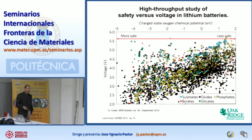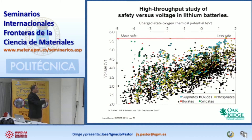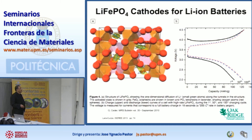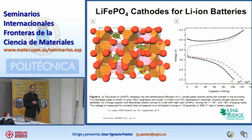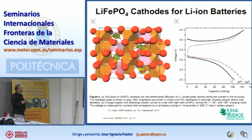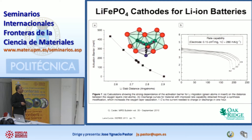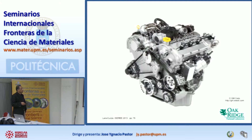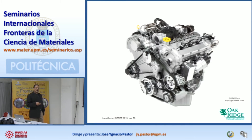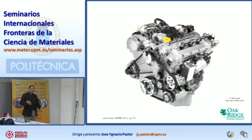That's the power of theory. We can predict these things from first principles. We have access to supercomputers and we do the calculations. Here is another example of cathodes for lithium-ion batteries. There was a company in the US called A123 — unfortunately they went bankrupt, but they were commercializing iron phosphates for lithium-ion batteries. All these calculations are applied to materials like photovoltaics, thermoelectrics, batteries, and photocatalysis.